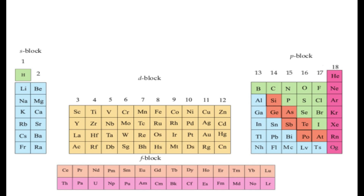Based on the sub-shell electronic configuration, elements are classified into four blocks — s, p, d, and f — in the modern periodic table.